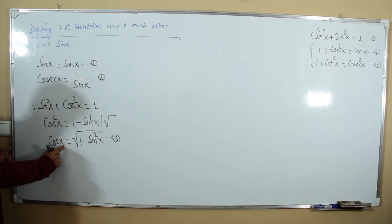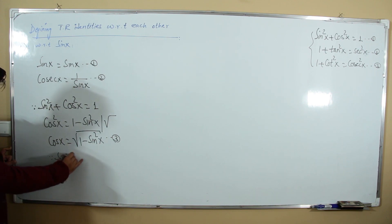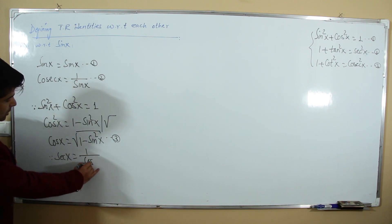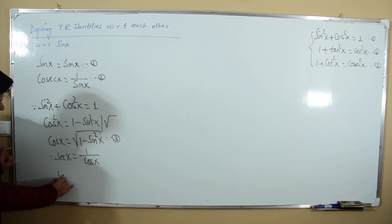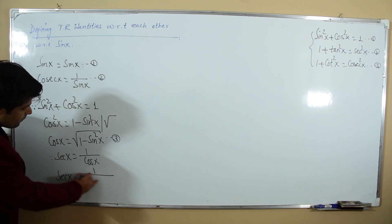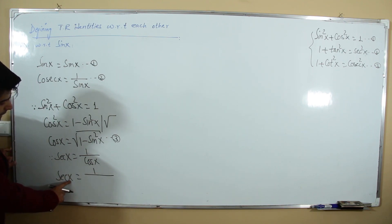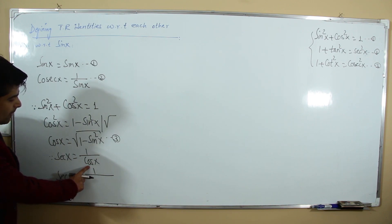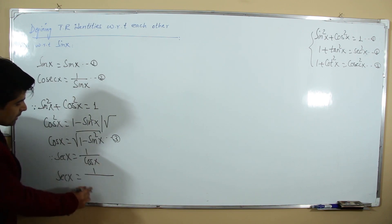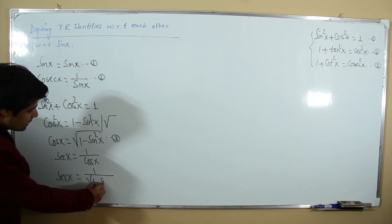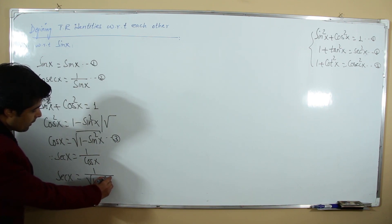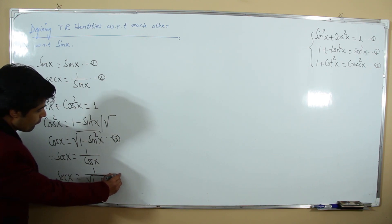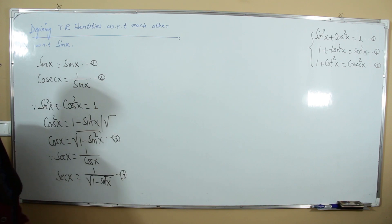Since secant is related to cosine (sec = 1/cos), secant with respect to sine is 1/√(1 - sin²x). This is our fourth relation.